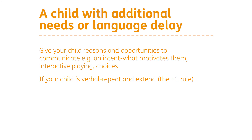Giving a child choices can give them an opportunity to communicate. If a child is verbal but what they say is quite limited, we can repeat what they say and extend it. If we're thinking about helping a child make word combinations, we talk about something called the 'plus one' rule. So for example, if a child showed us a book and said 'book,' we could say 'read book,' or 'a big book,' or 'book please.' We're adding on another word, showing them the different ways you can combine language.